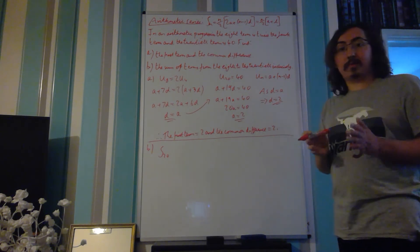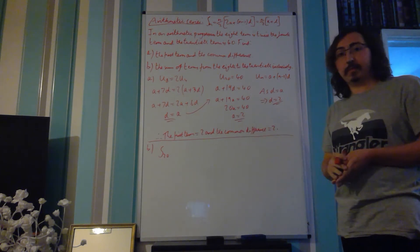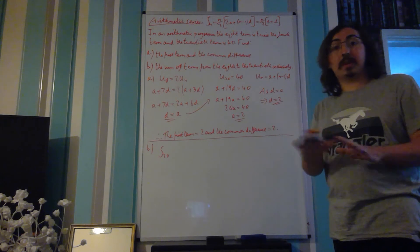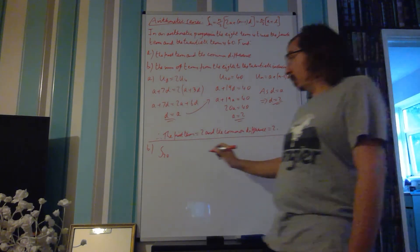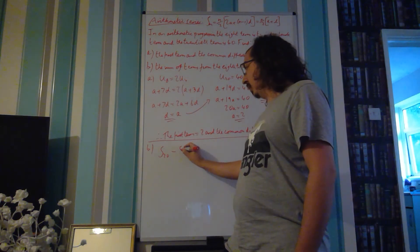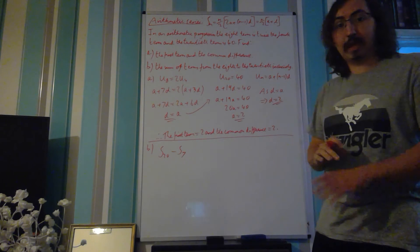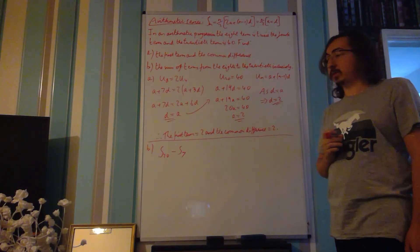However, we only want to start from the 8th term, so 8th, 9th, 10th, and so on, up to 20. So, in other words, we don't care about the first 7 terms. And because we don't care about them, we're going to subtract the sum of the first 7 terms, because it gets rid of them, from the total summation up to the 20th term.